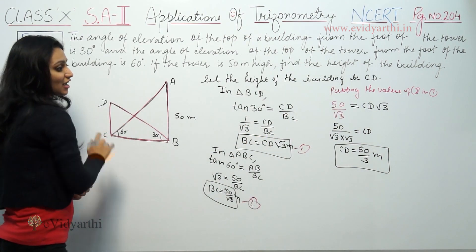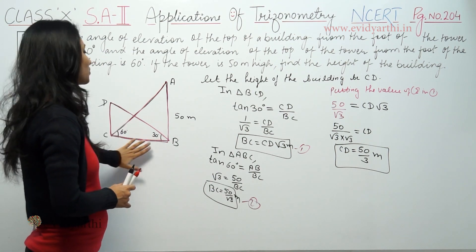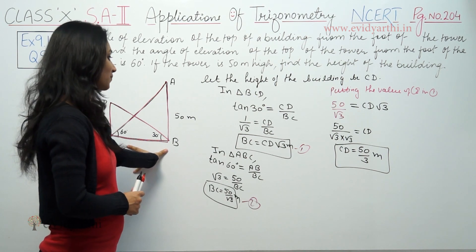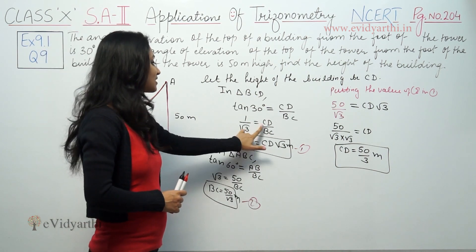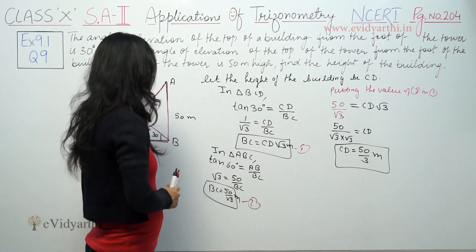The height of the building is 50 divided by root 3 divided by root 3, which equals 50 by 3 meters.